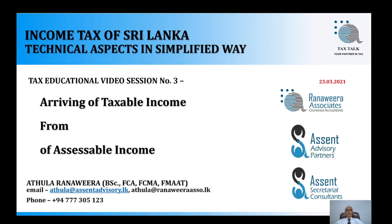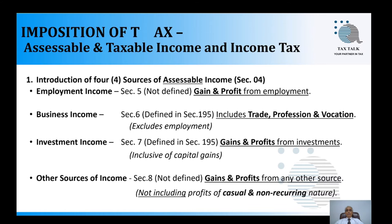Today we are discussing how to arrive at the taxable income from the accessible income. As we learned through the previous session, there are four sources of accessible income under Section 4 of the Inland Revenue Act: employment income, business income, investment income, and other sources of income.